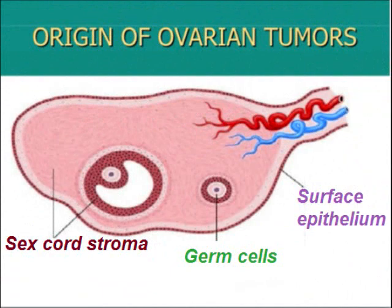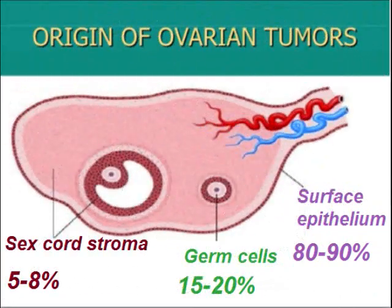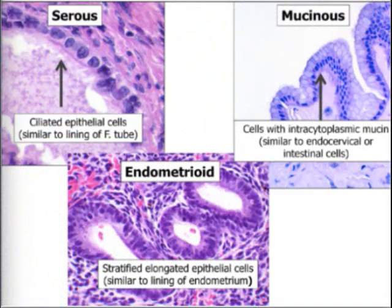Sometimes they are associated with ascites and unexplained weight loss. The origin of ovarian tumors is from sex cord stromal tumors, germ cells, or surface epithelial tumors. Among surface epithelial tumors, serous tumors are more common than mucinous ones. Mucinous make only 10–15% of the total tumors. Surface epithelial tumors are divided into serous (more common), mucinous (10–15%), and endometrioid type (less than mucinous).